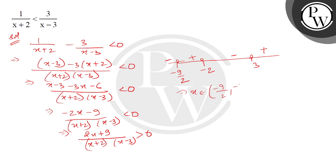From minus 9 by 2, then minus 3 to infinity. I hope this is clear.